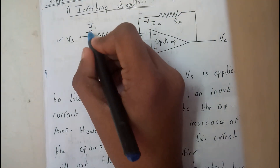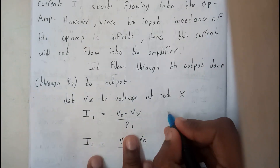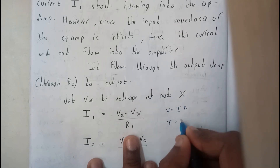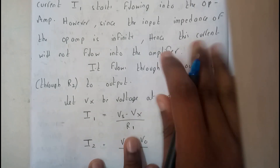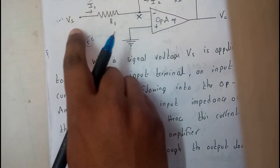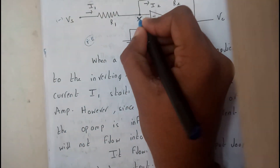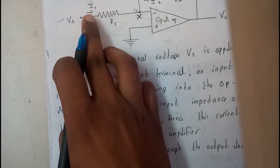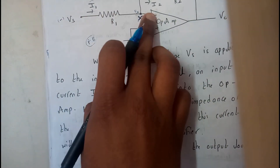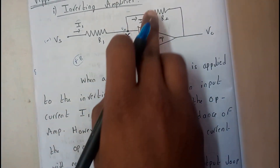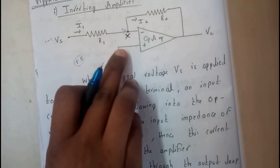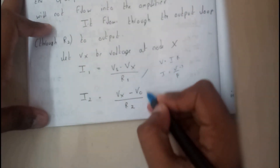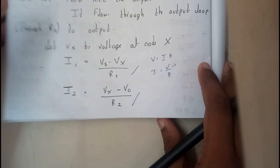We will be writing the equations for I1 and I2 using V = IR, so I = V/R. I1 is the current between VS and VX, so I1 = (VS − VX) / R1. I2 will be (VX − V-naught) / R2. That is how we derive these two equations.